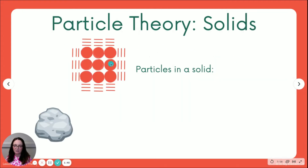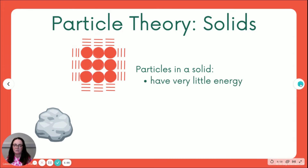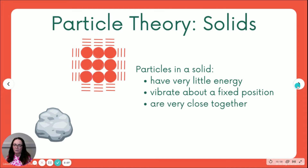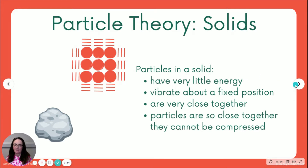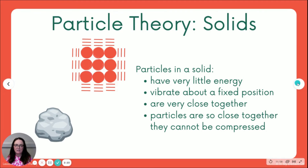Moving on to particle theory, we've got a diagram of particles. We're talking about a solid in this first one, and each of these circles represents a particle. These lines are movement lines. Particles in a solid have very little energy — these movement lines represent them vibrating around their fixed position. They're very close together, they are touching, and they are so close together they can't be compressed, they cannot be squished together.